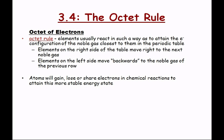If you recall, the last thing we talked about was the octet rule. Elements usually react in such a way as to attain the electron configuration of the noble gas closest to them in the periodic table. Elements on the right side of the table move right to the next noble gas. Most of the P-block atoms will move to the right to take on the configuration of the noble gas closest to them on the right.